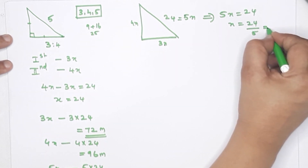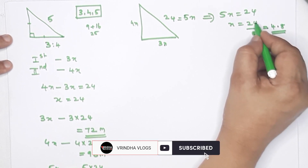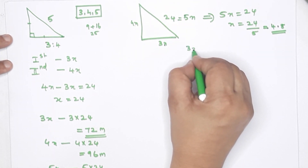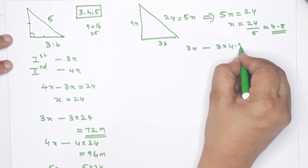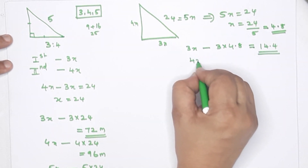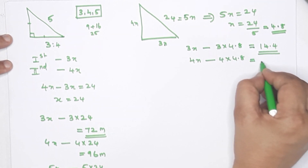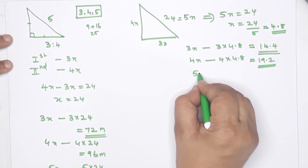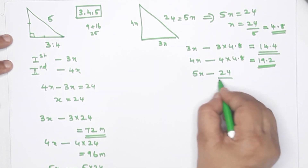x equals 4.8. Then 3x equals 3 into 4.8, which equals 14.4 meters. And 4x equals 4 into 4.8, which equals 19.2 meters. Hypotenuse 5x equals 24 meters.